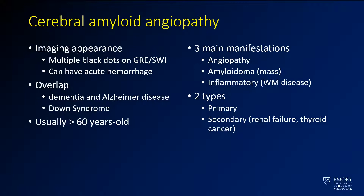The imaging appearance we've seen: multiple peripheral areas of hemosiderosis on gradient susceptibility imaging. There's a great deal of overlap between dementia, Alzheimer's disease, and Down syndrome. Usually these patients are greater than 60 years old. For cerebral amyloid disease, there are really three types to think about. The one we're seeing here is the angiopathy, which is essentially vasculitis associated with amyloid.